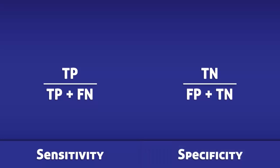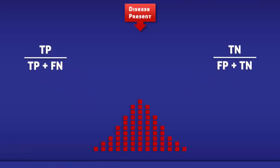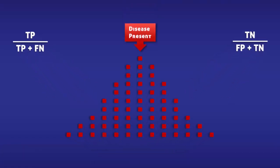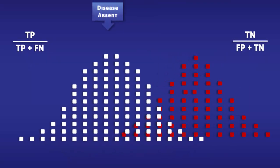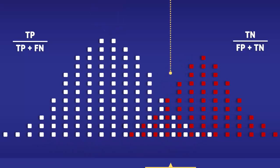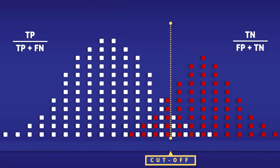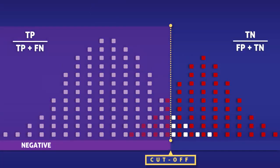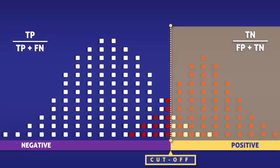To help us compare these equations, we are going to imagine that a group of people are being tested for a disease. These red squares represent people who have it, and the white squares represent people who don't. This yellow line represents a cutoff level for a test. To the left of the line the test returns negative, and to the right it returns positive.